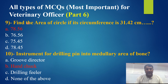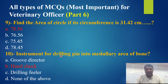Find the area of the circle if its circumference is 31.42 cm. The best answer is 78.56 cm². The instrument for drilling pills into the medullary area of the bone — groove director, hand chuck, drilling filler, or none of the above? The best answer is hand chuck.